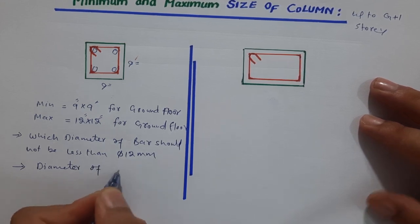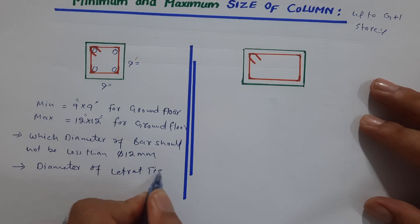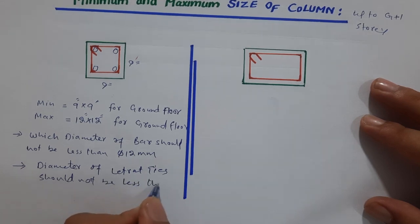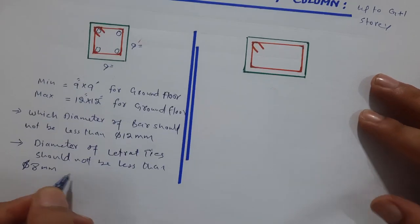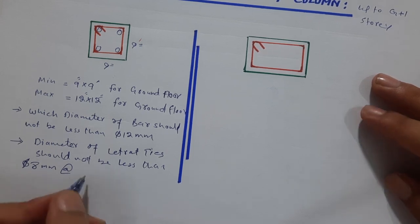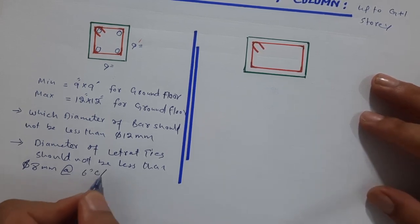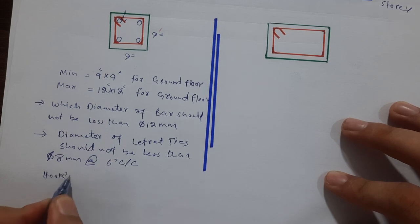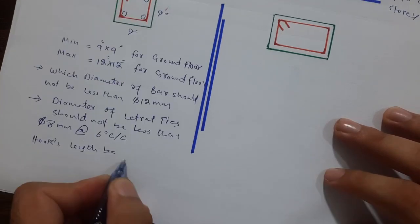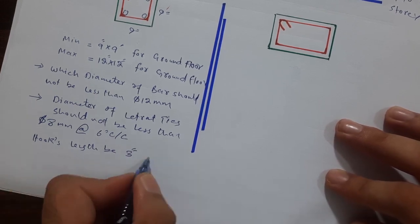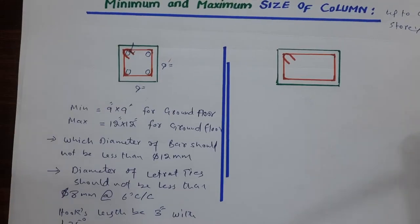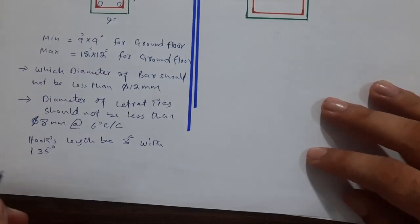The diameter of lateral ties should not be less than 8 millimeter, with the spacing of six inches center to center. Hooks should have a length of three inches, bent at 135 degrees.